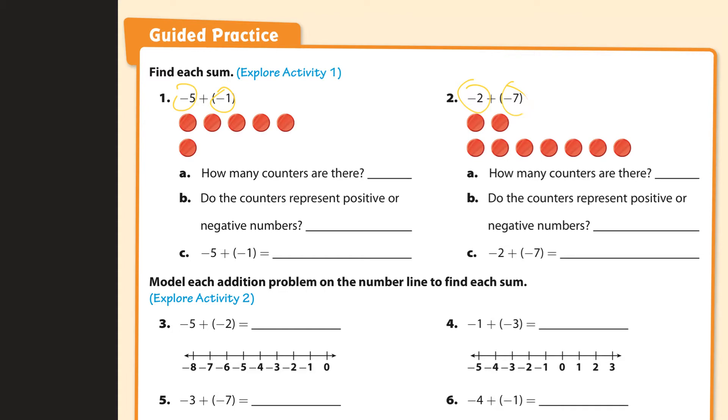I'm going to erase this stuff here and find each sum. Now, the sum means to add, and we're adding five negatives and one negative. So, we have five negatives here and one negative. How many counters are there? There are six. Do they represent positive or negative? Well, everything's negative. So if you have five negatives and one negative, you have six negatives. So negative 6 would be the sum of that.